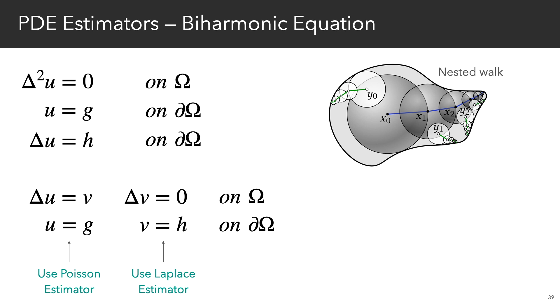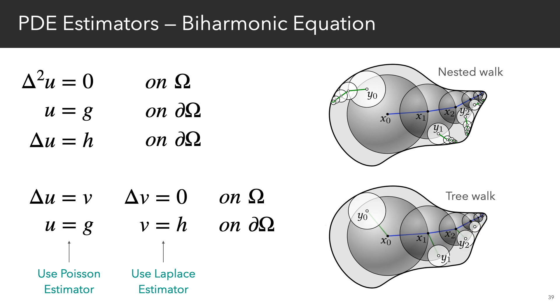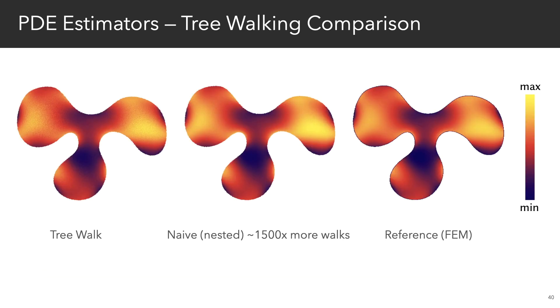But as you can imagine, nesting walks is pretty inefficient. So in the paper, we introduce what we call a tree-walking strategy that reuses walks kind of like in the spirit of bidirectional path tracing. The walks are now more strongly correlated, but they are also much cheaper to compute. And in practice, we get reduced variance for equal compute time.